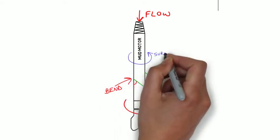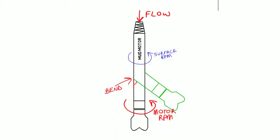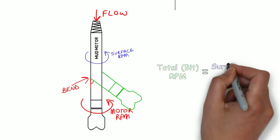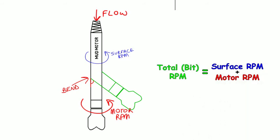During normal drilling, the rig rotates the entire drill string from surface. This mode of drilling is called rotating. While rotating, the bit is turned at the surface RPM plus the motor RPM. This is known as the total or bit RPM.